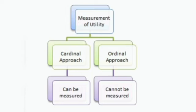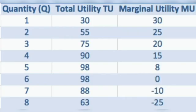Cardinal utility is the utility where the satisfaction we get can be measured in numbers. Total utility is the sum of all utility — all satisfaction we get from the consumption of all commodities, that total satisfaction is called total utility. Marginal utility is the additional utility we get from consuming an additional unit of a commodity — you can call it additional unit of satisfaction.